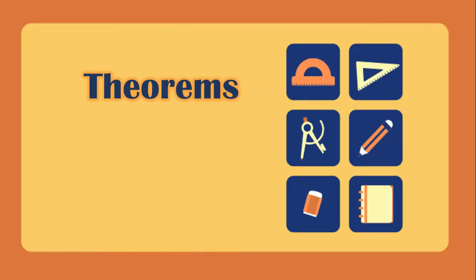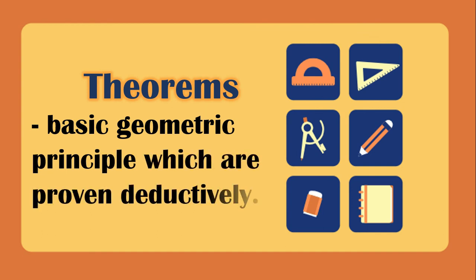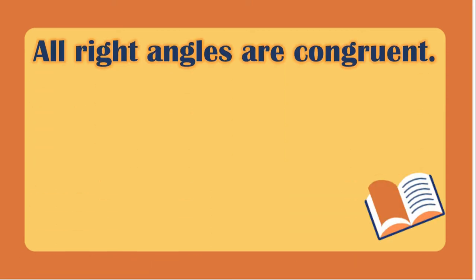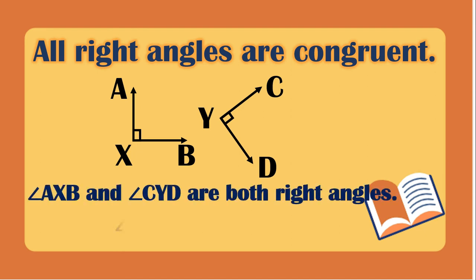Theorems are basic geometric principles that are proven deductively — unlike postulates, theorems are already proven. The first theorem: all right angles are congruent. Since angle AXB and angle CYD are both right angles, they are congruent because they each measure 90°.